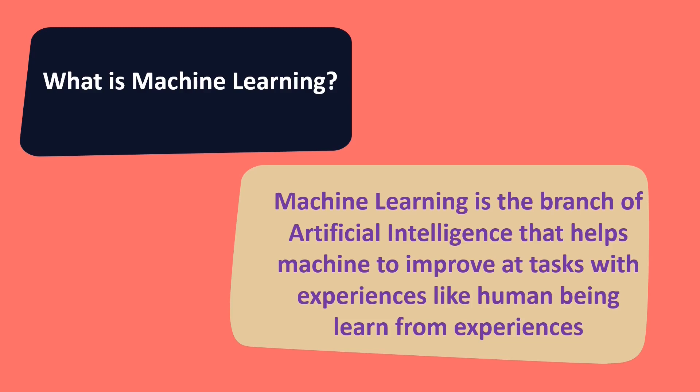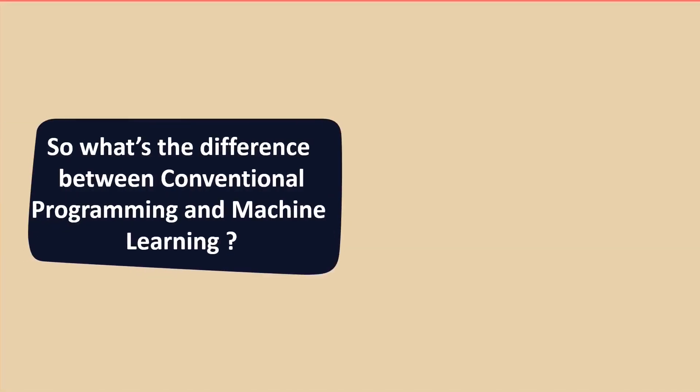With experiences, like human beings learn from experiences. This is the new paradigm of programming that helps us to perform tasks that were infeasible to do before. So what's the difference between conventional programming and machine learning? Let's look.